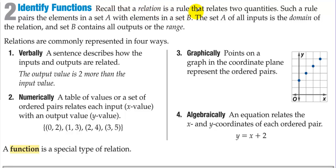Identify functions. A relation is a rule that relates a quantity — such a rule pairs elements in set A with elements in set B. The set A of all inputs is the domain of the relation and set B contains all outputs, or the range. Relations are commonly represented in four ways: verbally — a sentence describes how the inputs and outputs are related, such as 'the output value is two more than the input value'; numerically — a table of values or set of ordered pairs; graphically — points on a graph in the coordinate plane; and algebraically — an equation such as y equals x plus 2.